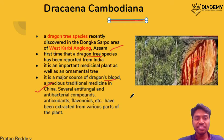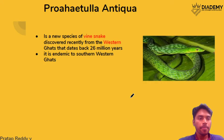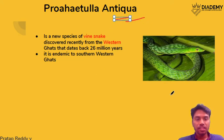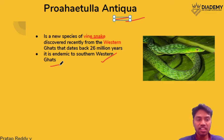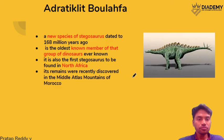UPSC tends to ask questions about such species — for example, which species is recently in news and why. The next topic is Prohetulla antiqua, a type of vine snake found in the Western Ghats. It dates back 26 million years and is endemic to the Western Ghats. Note that there are two committees on the Western Ghats: the Kasturi Rangan and the Gadgil committees.